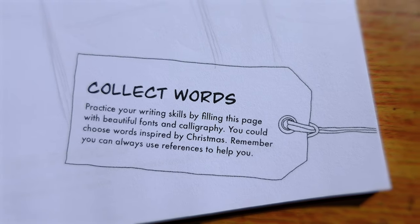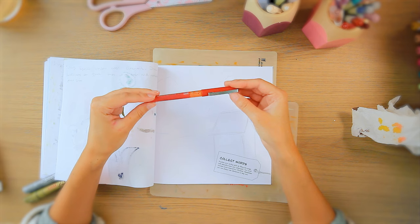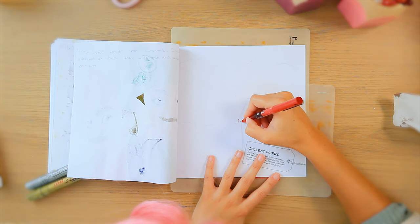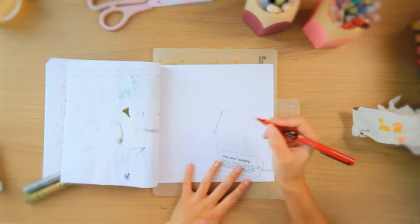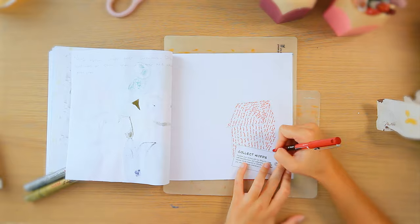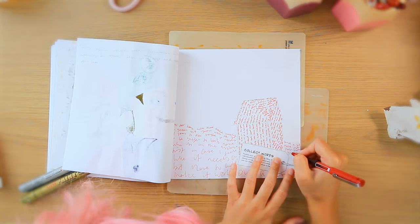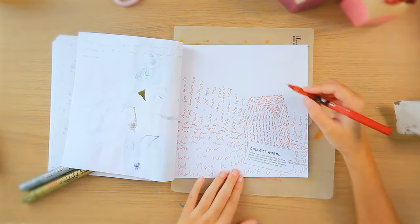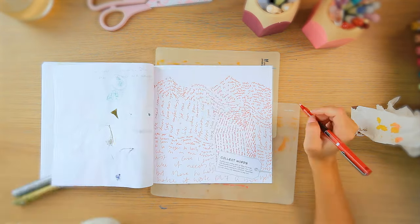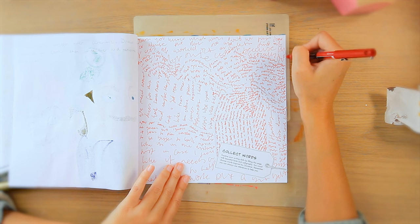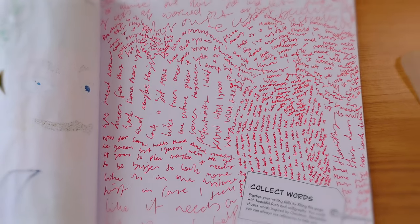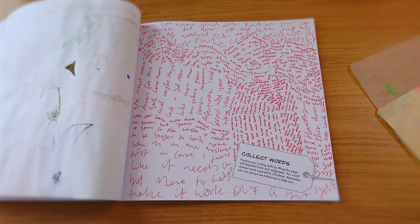The next prompt is to collect words. Practice your writing skills by filling this page with beautiful fonts and calligraphy. You could choose words inspired by Christmas. Remember you can always use references to help you. For this page I have a loose pencil drawing underneath and I'm attempting to fill the page with a load of nonsense. Writing down whatever words come to mind but following the sketch. Honestly I don't know if this one worked. I feel like you can kind of loosely see that there's a landscape there. But what do you think? Let me know down below. Can you see the landscape for this piece?